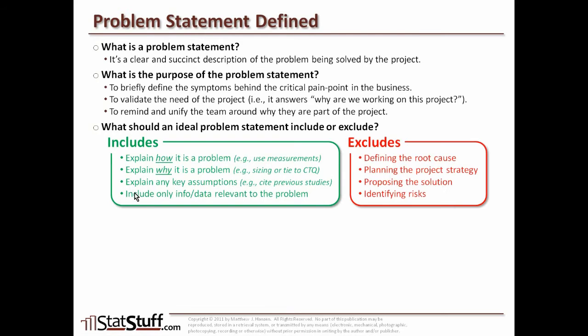There are several things we want to make sure we exclude from every problem statement. First, defining the root cause. The whole point of doing a Lean or Six Sigma project is because we don't know the root cause yet. If we know the root cause at the time of writing the problem statement, we probably don't even need to do the define and measure phase — we can jump right to analysis. So keep an open mind and make sure the root cause is not identified or assumed within the problem statement itself.